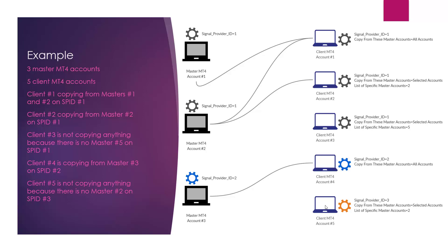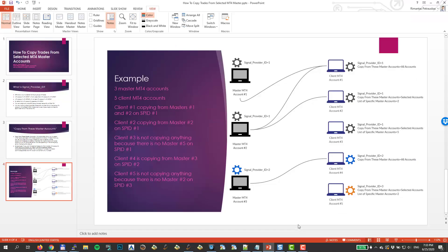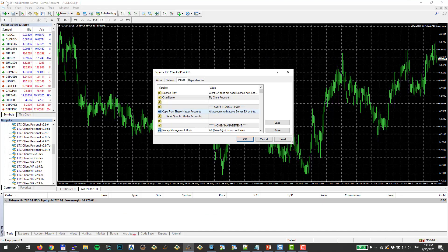Now let's switch to the actual MetaTrader account and look at these parameters. One more thing to mention: when I talk about the master account numbers for the 'list of specific master accounts' parameter, it's the MetaTrader account number that should go in there — the account number that you use to log into MetaTrader. That's your MetaTrader account number.